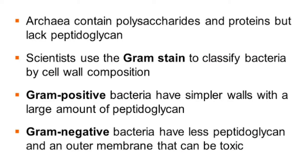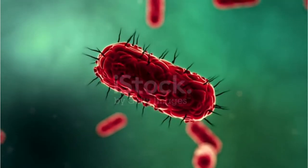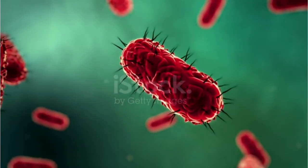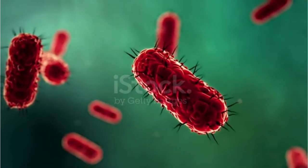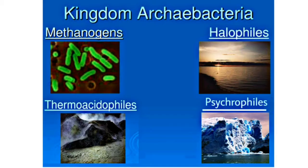Just like bacteria, Archaea are divided into two types: gram-positive and gram-negative. Gram-positive Archaea have a cell wall with pseudomurein and other complex carbohydrates. Gram-negative Archaea have no cell wall at all and no outer membrane, but they have a thick protein and glycoprotein coat. Commonly, there are four major groups of Archaea: methanogens, halophiles, thermophiles, and psychrophiles.